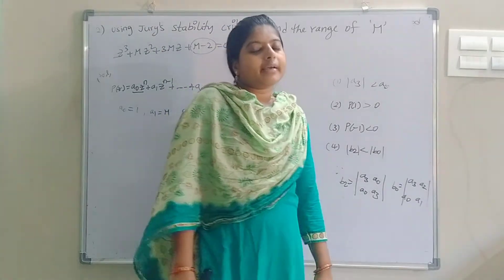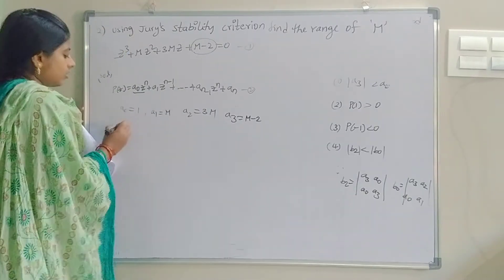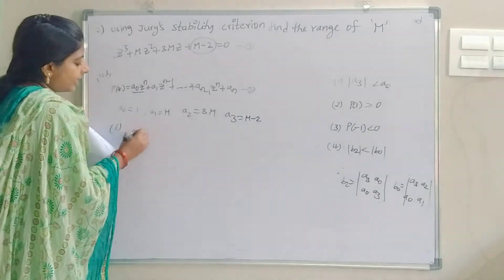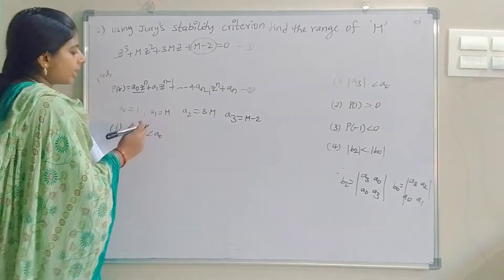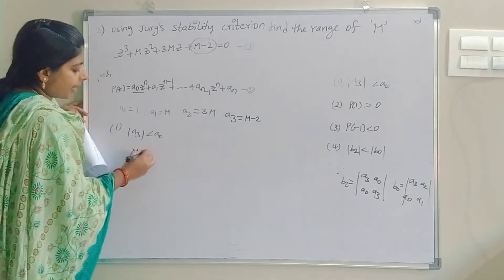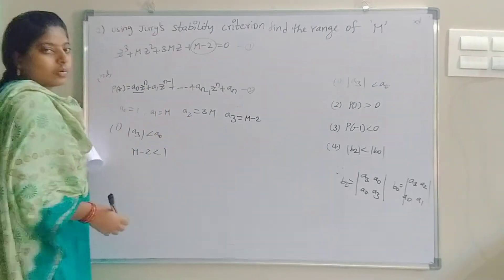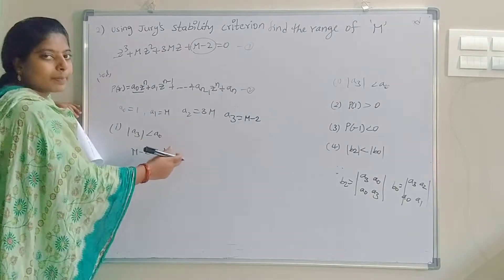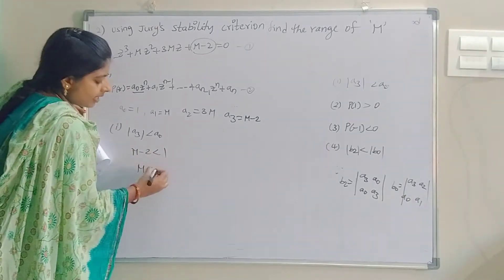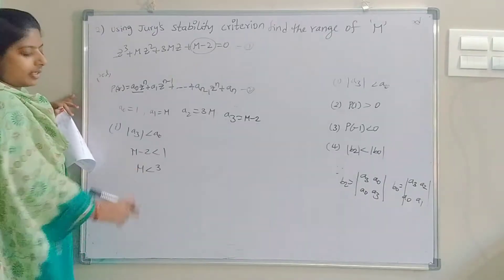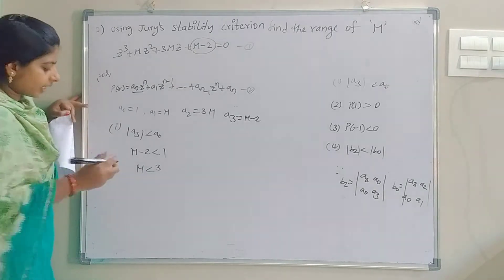Condition 1: a₃ ≤ a₀. Substituting, a₃ = m − 2 ≤ a₀ = 1. So m − 2 ≤ 1, which gives m ≤ 3. This is condition 1.